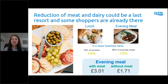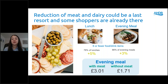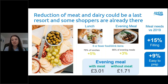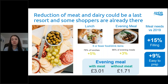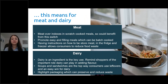Meat is an important part of many meals, but evening meals with meat are considerably more expensive than those without, so we could see meat being one of the ingredients dropped from dishes. Consumers are increasingly looking for meals to be filling and easy, so we need to dial up these messages on how meat and dairy can meet these needs, to keep them as an integral part of consumers' cooking repertoires. Indian, roasts and Italian are some of the top meals cooked from scratch.